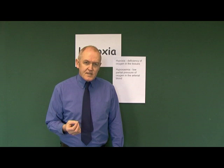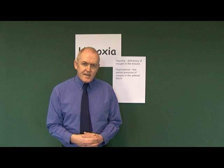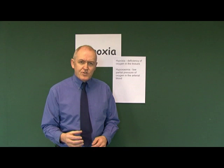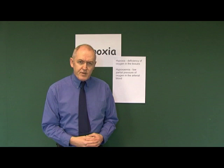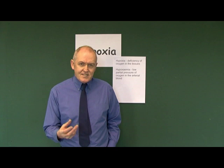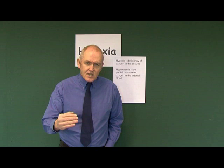But sometimes things go wrong and we develop a condition called hypoxia. Hypoxia means deficiency of oxygen in the cells of the body at the level of the tissues. So if a tissue is hypoxic, there is a lack of oxygen in the cells of that tissue. Another term people often use is hypoxemia, which is different from hypoxia. Hypoxemia means deficiency of oxygen in the blood, because it ends in 'aemia'. So hypoxia is lack of oxygen at the level of the cells and tissues; hypoxemia is lack of oxygen in the blood.